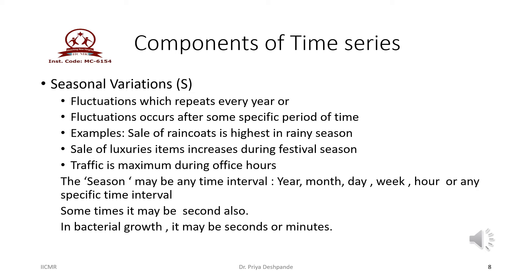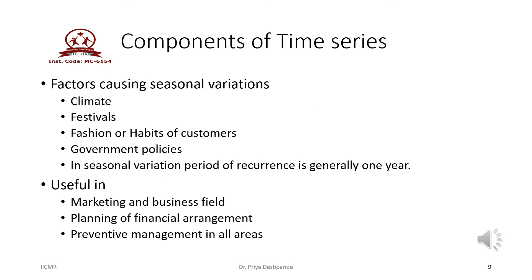If we see the growth of bacteria, the season may be seconds or minutes. Important factors responsible for seasonal variations are climate changes, festivals, change in fashion or habits of customers, and change in government policies and strategies. Generally, seasonal variations reoccur once in a year. The study of seasonal variation is useful in marketing and business to understand future demand and price of commodities, in planning financial arrangements, and in preventive maintenance or management of all areas.